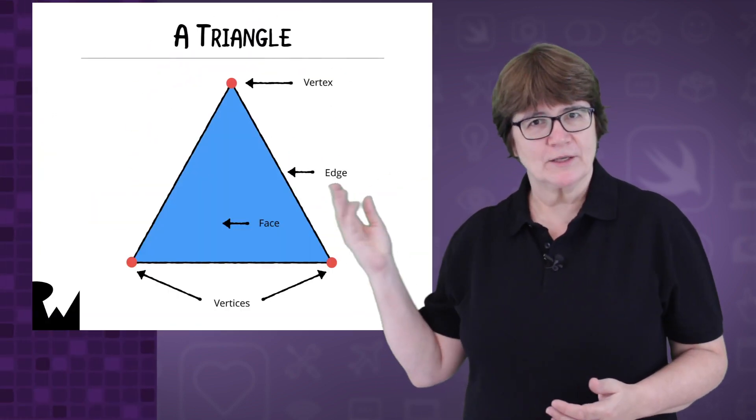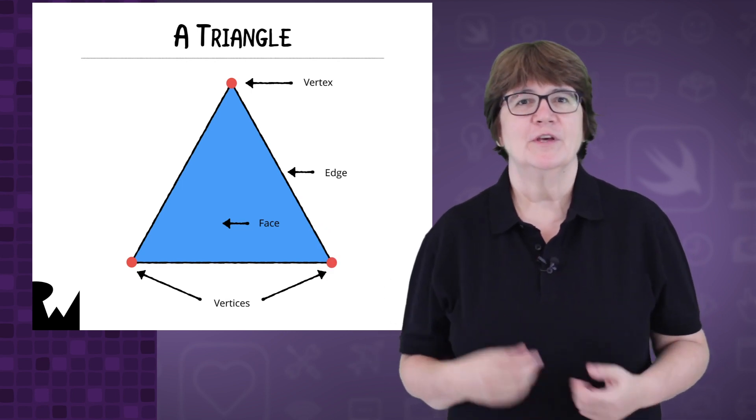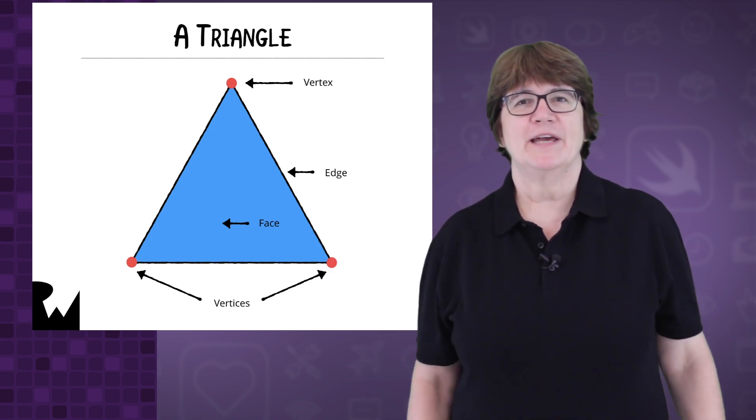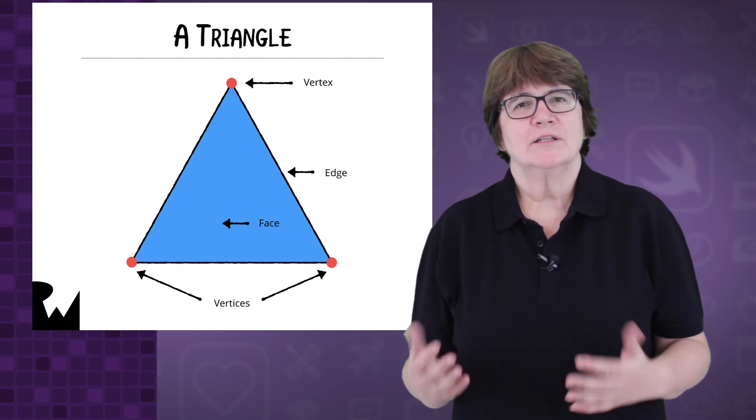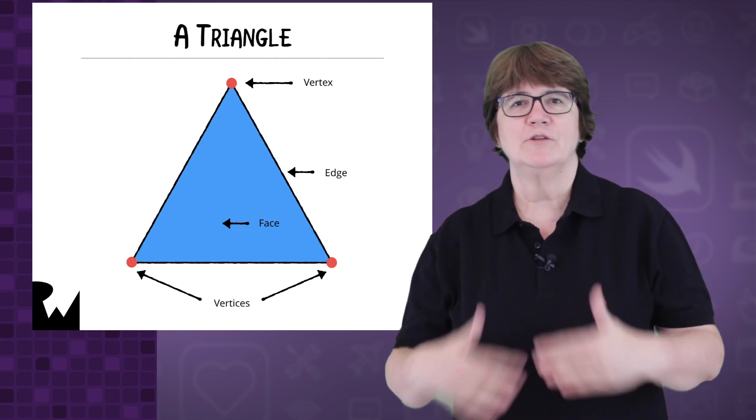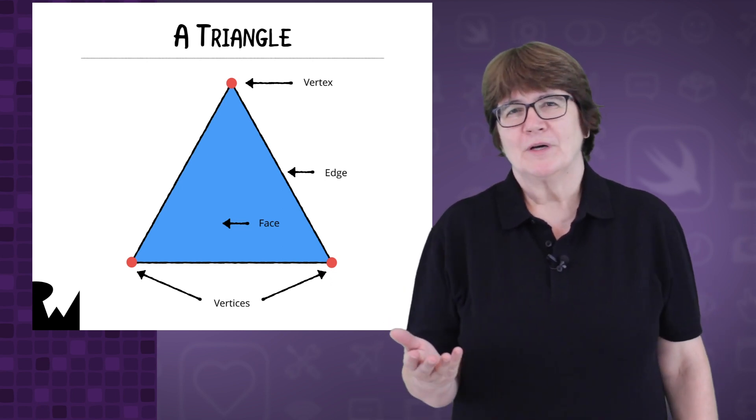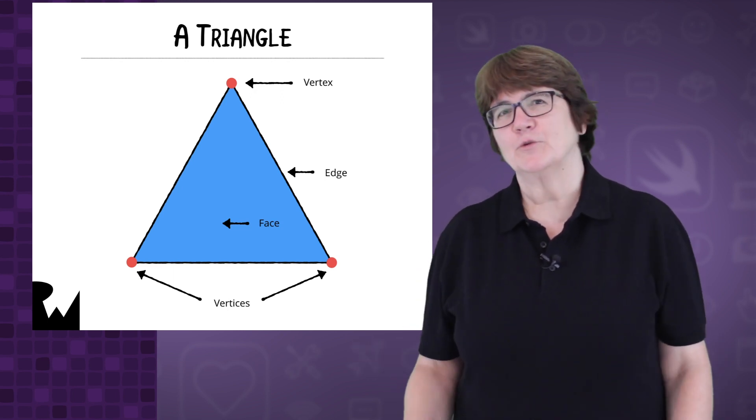3D models are made up of triangles like this one. Each triangle has three vertices, three edges and one face. The GPU is optimized for triangles because a triangle is the polygon with the fewest number of points that can be drawn in two dimensions. In other words, all its points are in the same plane and a triangle is always flat.